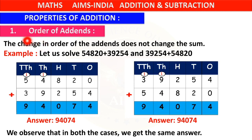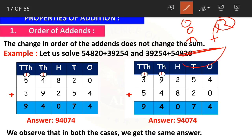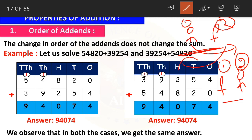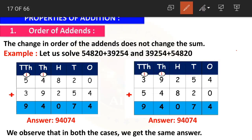The first property is the order of addends. The two or more numbers which we are adding together are called addends. The property states: a change in the order of the addends does not change the sum. For example, suppose you are sitting in the first place and your friend is in the second place — if you swap places, the group is the same. In the same way, even if we change the order of addends, the sum does not change.